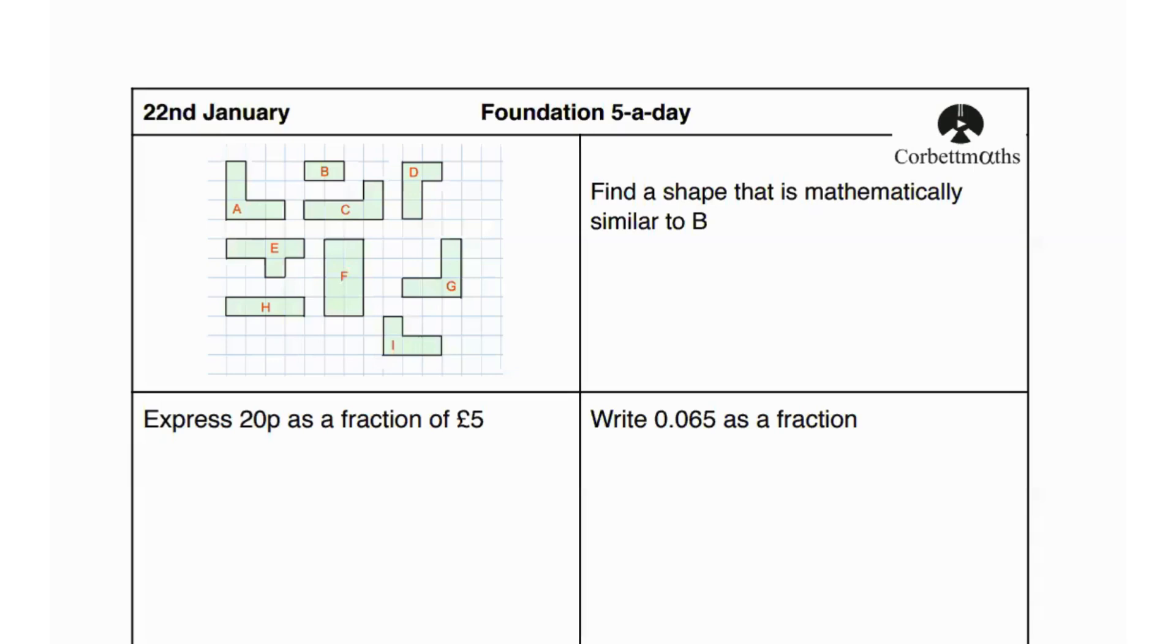First question says find a shape that is mathematically similar to B. So if you look at all of these shapes, the shapes that I would shortlist to be similar to B are H and F. But there's only one shape that is mathematically similar to B and that is shape F.